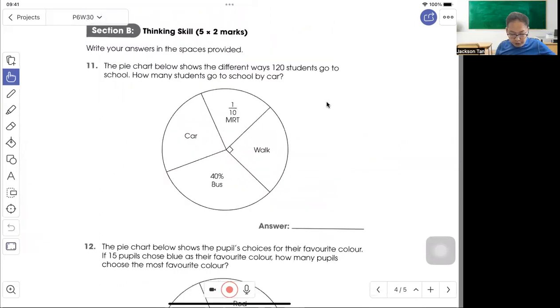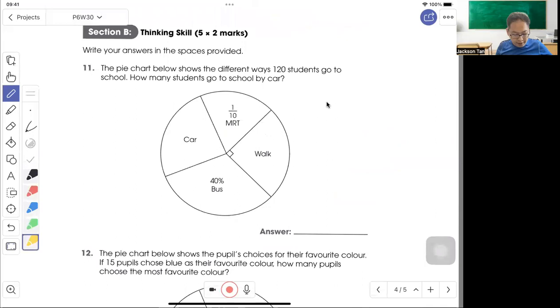The pie chart shows different ways 120 students go to school. How many students go to school by car? So here means it's 90 degrees. So fraction is 1 out of 4. So this one over down here, fraction will be 40 out of 100, simplest form 2 out of 5. So to find the car, let's find the fraction. So 1 whole minus 1 out of 10, minus 1 out of 4, minus 2 out of 5, give the fraction of